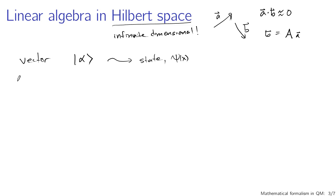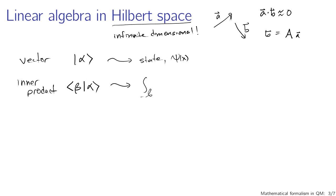What else can we do in linear algebra? We can compute inner products. The way we'll write that in this notation is an angle bracket, beta, vertical bar, alpha, angle bracket. In the language of states and wave functions, inner products are represented as integrals: from minus infinity to infinity of psi-beta-star of x times psi-alpha of x, integrated dx. This is the same normalization and orthogonality integral we've been working with in wave functions, now expressed in a more compact and general linear algebra notation.